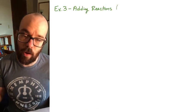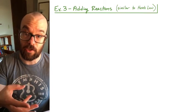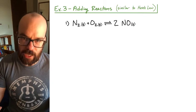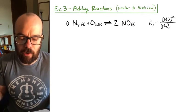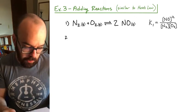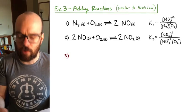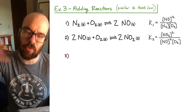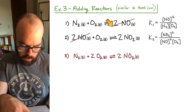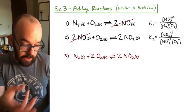Now for our final example: what happens whenever you take two reactions and add them together. This is very similar to Hess's law in thermodynamics, but instead of adding the delta H values, we're going to multiply the K values — I'll show you why. We start with two reactions whose K values are known (K1 and K2). When we add them together, the NO terms cancel on both sides, leaving us with N2 and O2 on the left and two nitrogen dioxide gases on the right as our third combined reaction. If we know K1 and K2 numerically, we can use them to find K3.